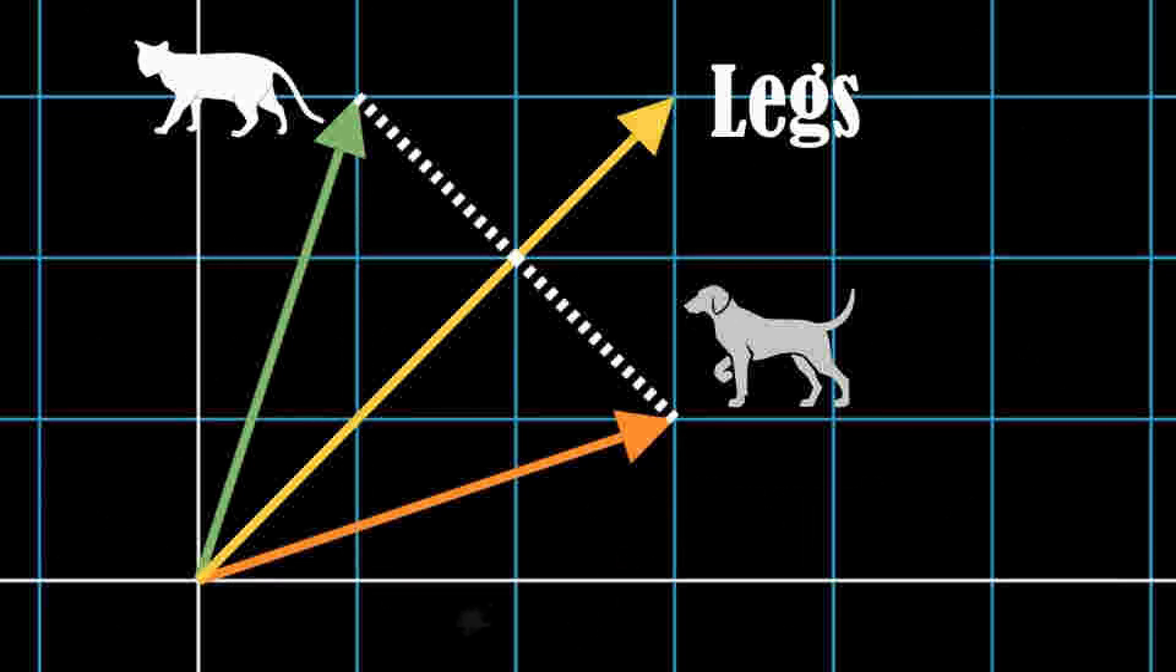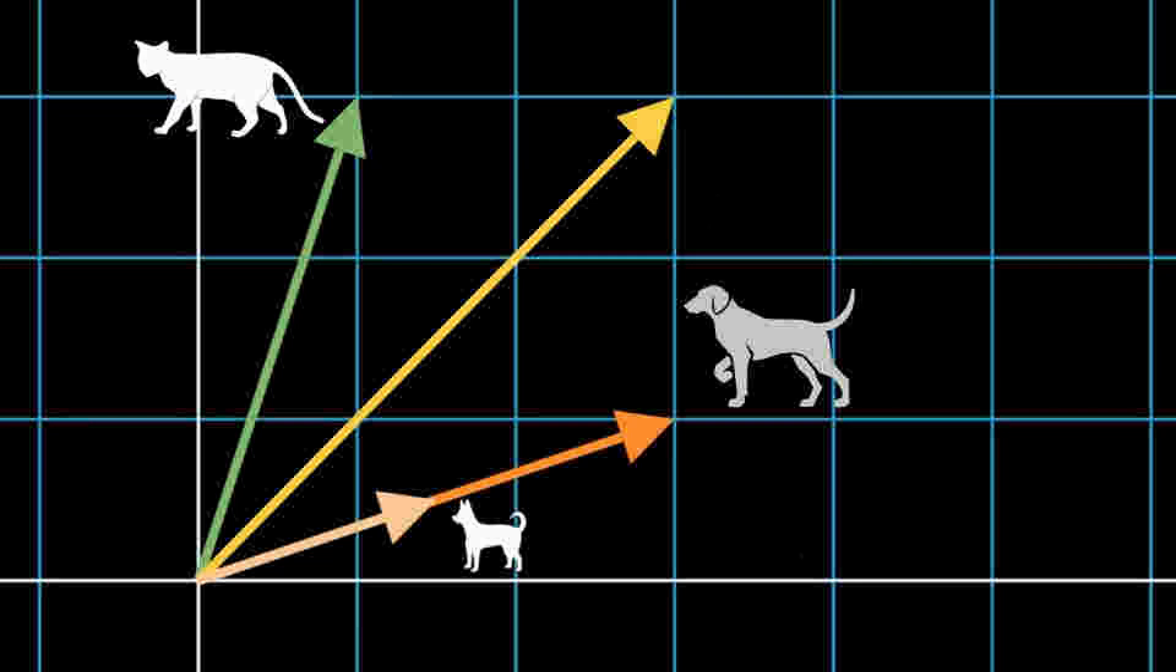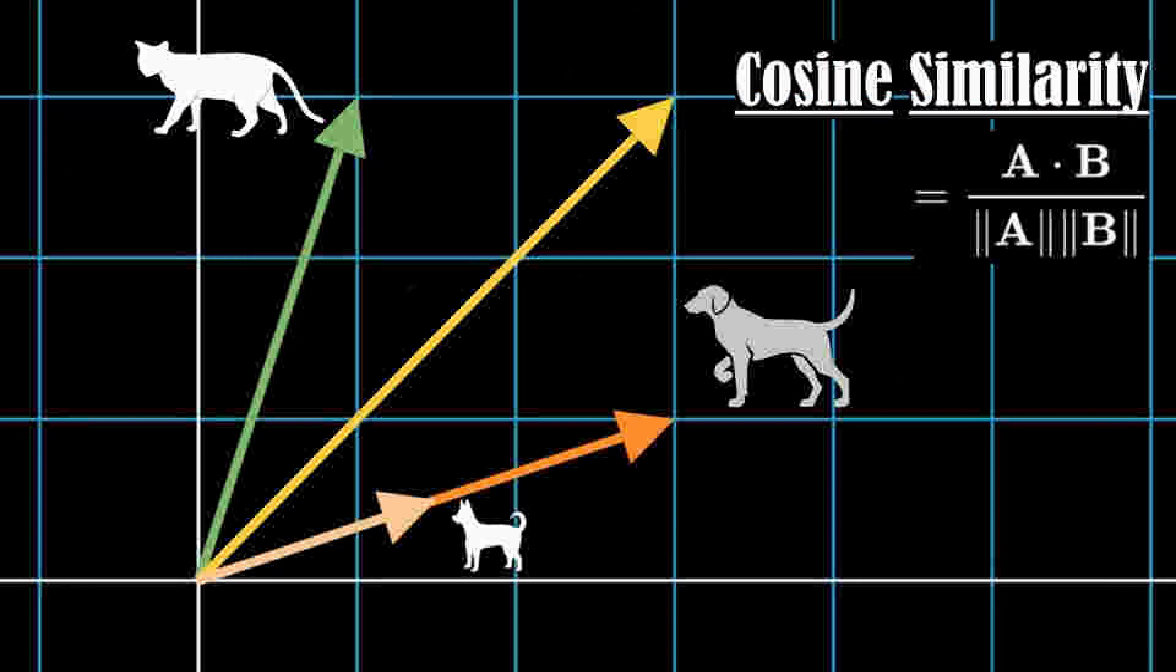Note that the dot product also depends on the length of the vectors. However, two vectors with different lengths that are in the same direction may still be considered as highly similar or perhaps even identical features as one is just a scaled version of another. Let us consider another kind of dog that is harder to recognize as a dog, maybe because it is smaller. The dot products of these two dog types to the legs vector would be different. But what if we want to measure similarity regardless of vector lengths? In that case, we would want to use another measurement called the cosine similarity, which is equal to the dot product normalized by the vector lengths. This measures the angle between two vectors. Using cosine similarity, we find that these two dog types in this direction have the same angle with the legs vector.